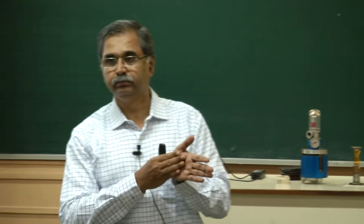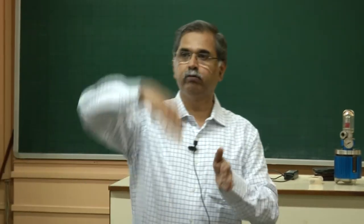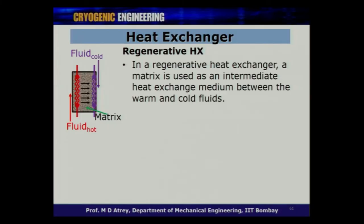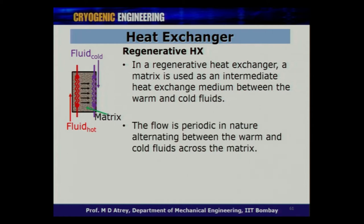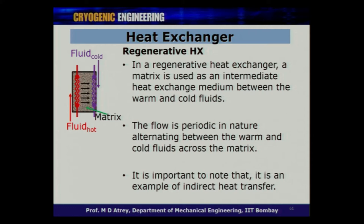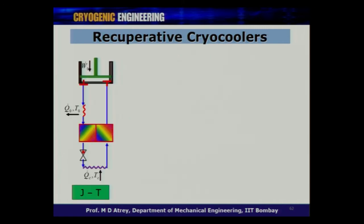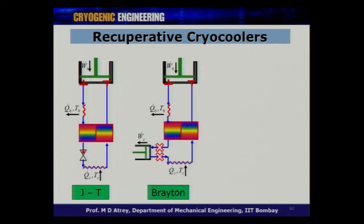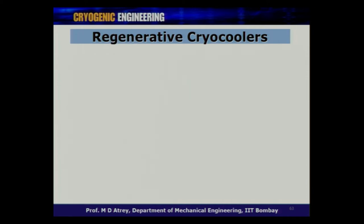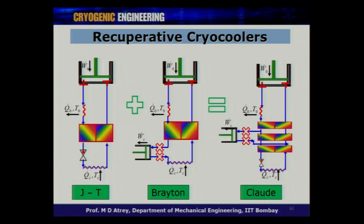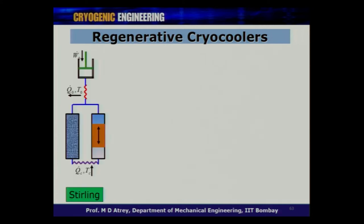In the regenerative heat exchanger, a matrix is used as an intermediate heat exchange medium between warm and cold fluids. The flow is periodic in nature, alternating between warm and cold fluids across the matrix. This is indirect heat transfer — no direct exchange between fluid A and fluid B, and they are not moving simultaneously. The refrigerators at home (Linde-Hampson, Brayton, Claude cycles) are all recuperative. Regenerative heat exchangers are used in Stirling coolers, Gifford-McMahon coolers, and pulse tube coolers.